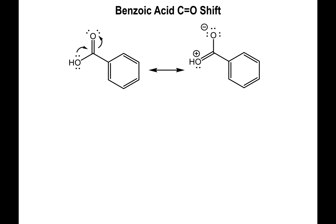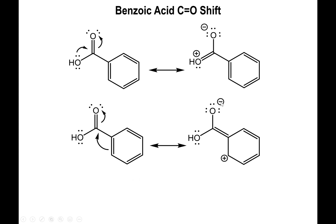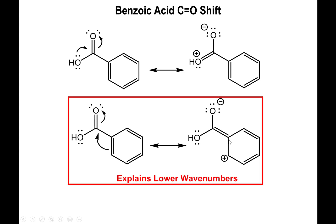But that doesn't explain why, for this specific example, we went down to 1690. That's where the benzene ring comes in. There is a multiple bond right next to the carbonyl. We can do a resonance structure by bringing the entire pi bond over to break apart the carbonyl, creating a resonance structure with a carbocation. This is not the most favorable structure, but it provides an explanation: the aromatic ring can partially donate its pi bond to break the C=O double bond, further lowering the carbonyl wavenumber.